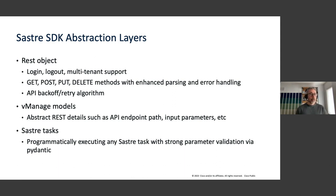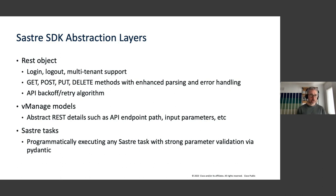There are three main abstraction layers in the SASTRE SDK. At the lowest level there is the REST object, then vManage models, and then SASTRE tasks. We'll provide examples of each as we go.